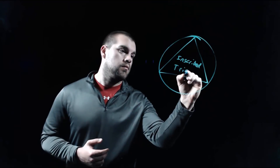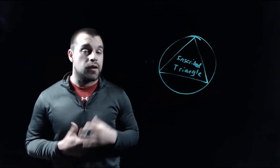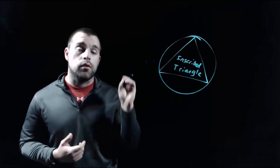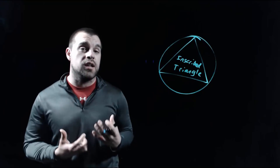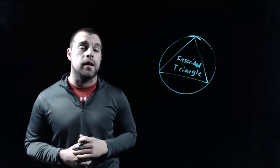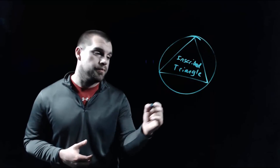So this is an example of an inscribed triangle. Now that circle around the outside also has a special name. The circle that contains the vertices of an inscribed polygon is called a circumscribed circle.